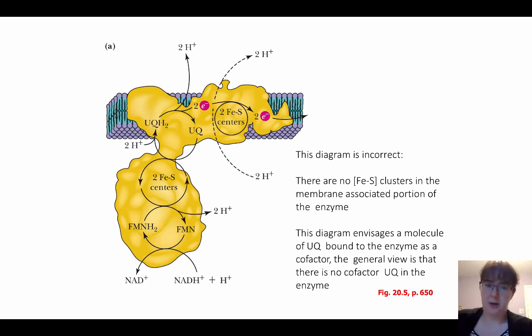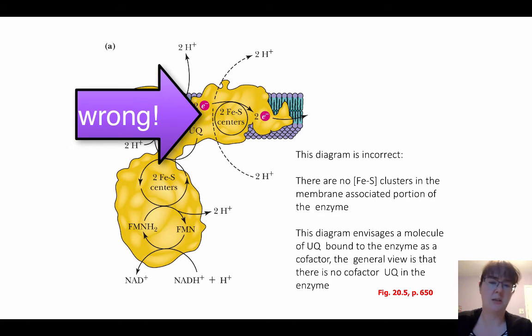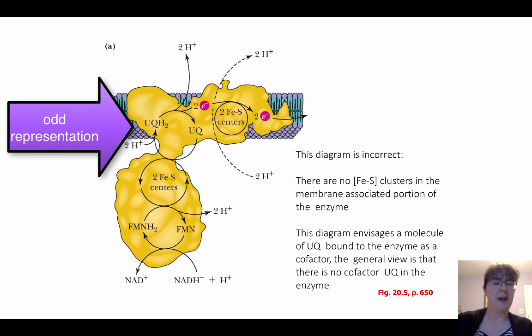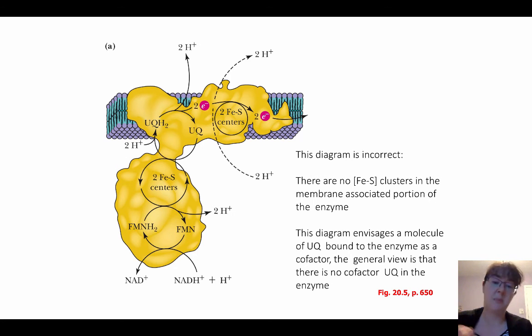This is a diagram that's in your book. It might have been updated by now, but just realize that one thing in here is incorrect, which is that there's no iron sulfur clusters that are in the membrane-associated portion of the enzyme. The other thing that's a little bit strange is that this one also shows that ubiquinone seeming to be bound to the enzyme like a cofactor. And again, in general, that ubiquinone is thought to be something that moves in the membrane and is not physically bound to the enzyme.